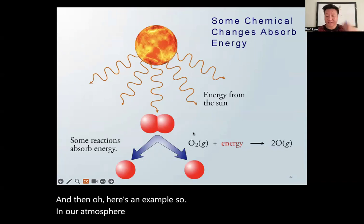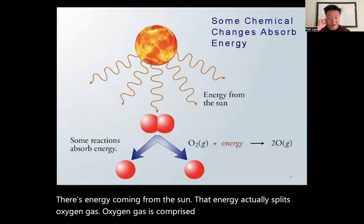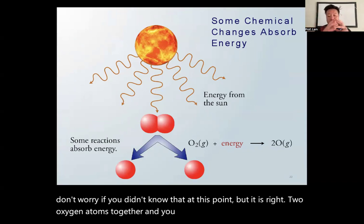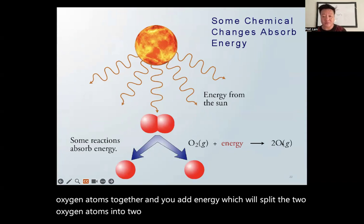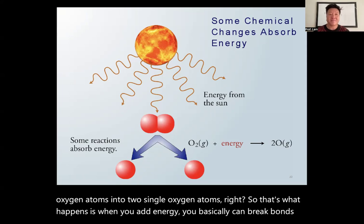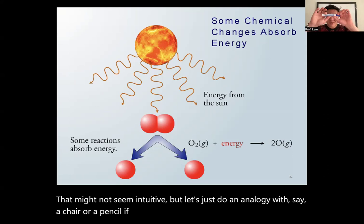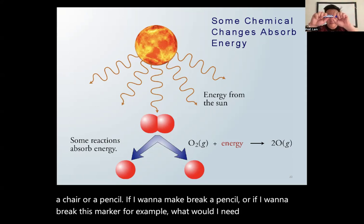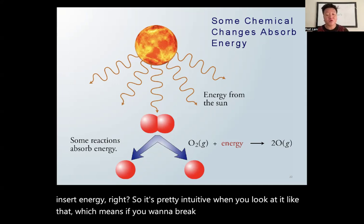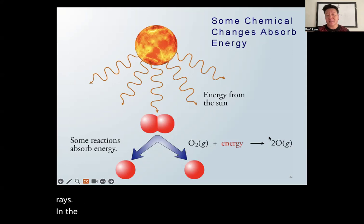An example of an endergonic process: in our atmosphere, energy from the sun splits oxygen gas (O₂, two oxygen atoms) into two separate single oxygen atoms. Adding energy breaks bonds — just like you need to insert energy to break a pencil or a marker. Breaking bonds always requires energy input. The splitting of O₂ by the sun's rays in the atmosphere is an endergonic process.